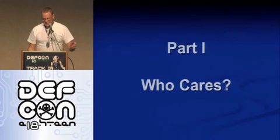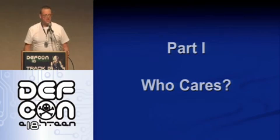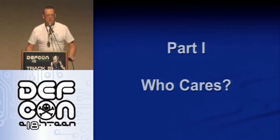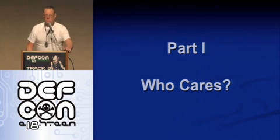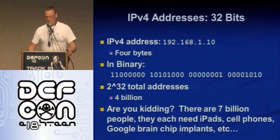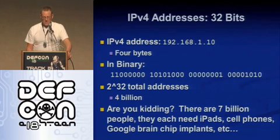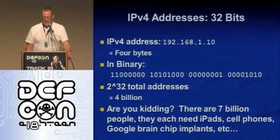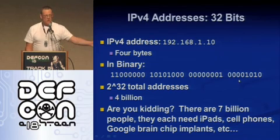So I'm Sam Bowne, I teach at City College San Francisco, and everything — my talk and everything — is all on the web, always available for anybody to use. Let me show you why I care. IP version 4 — we've all seen these addresses: 192.168.1.10. In binary, that's a 32-bit binary number. And there are only two to the 32 of them, that's only four billion.